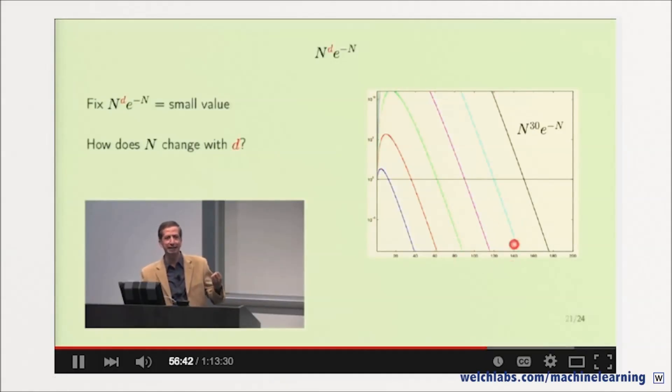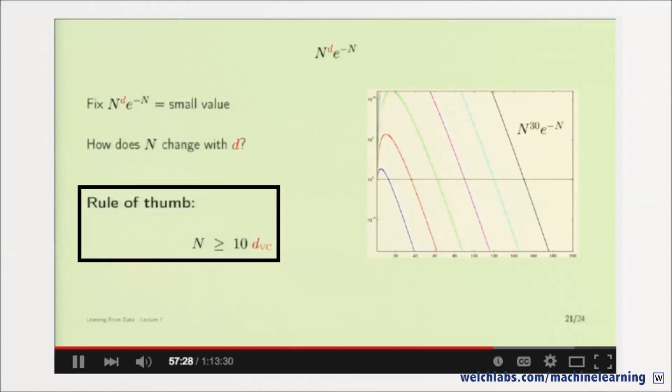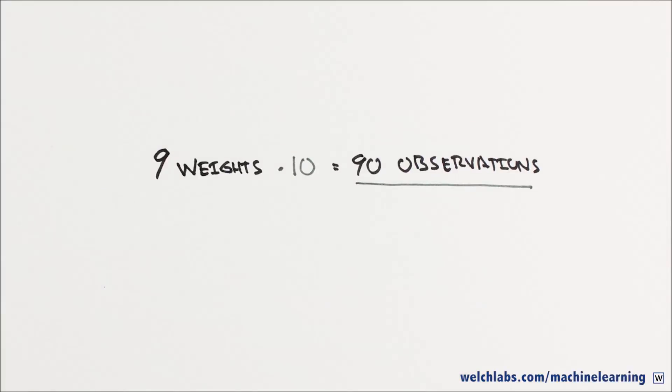So now we know overfitting is a problem, but how do we fix it? One way is to throw more data at the problem. A simple rule of thumb, as presented by Yasser Abu-Mustaf in his excellent machine learning course available from Caltech, is that you should have at least ten times as many examples as the degrees of freedom in your model. For us, since we have nine weights that can change, we would need 90 observations, which we certainly don't have.